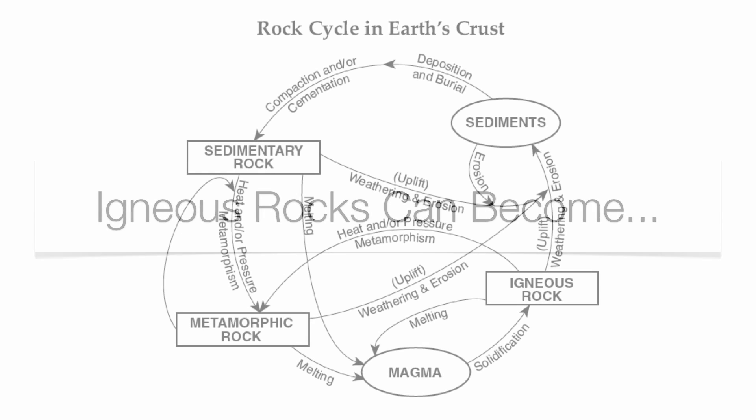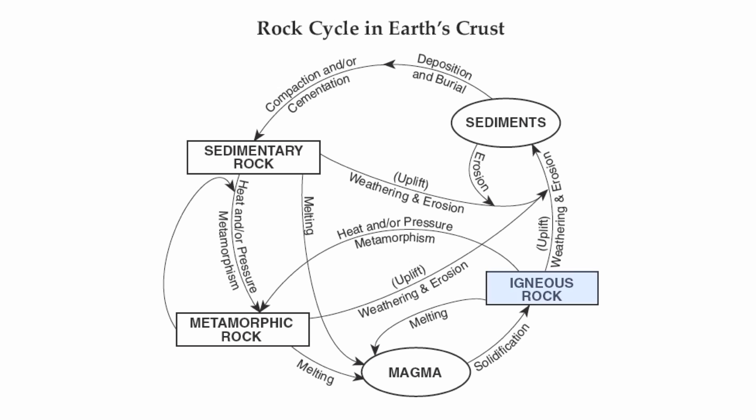The next rock type is igneous. Igneous rocks can become sedimentary: they undergo weathering, erosion, and uplift into sediments. Those sediments can be eroded even further into smaller particles, then deposited, buried, compacted, and cemented into sedimentary rock.